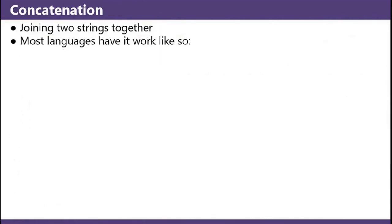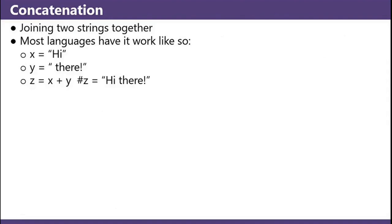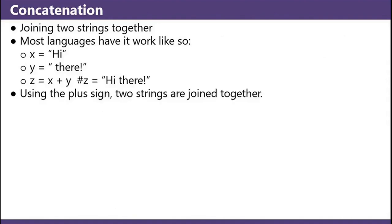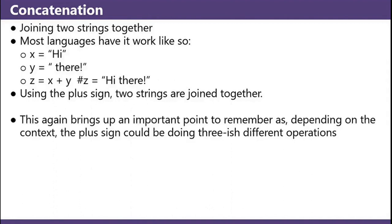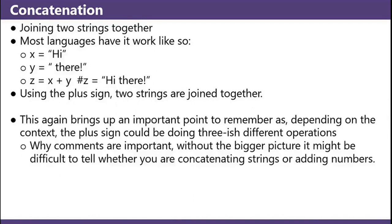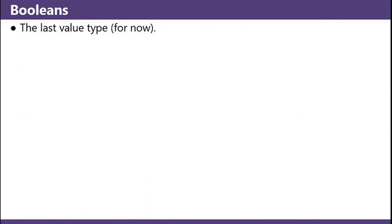Concatenation is joining two strings together. Most languages have it work like so. Example: x equals 'hi', y equals 'hi there', z equals x plus y — so now z equals 'hi there'. Using the plus sign, two strings are joined together. This again brings up an important point to remember: depending on the context, the plus sign could be doing three-ish different operations — float addition, integer addition, or string concatenation. This is also why comments are important; without the bigger picture, it might be difficult to tell whether you're concatenating strings or adding numbers.